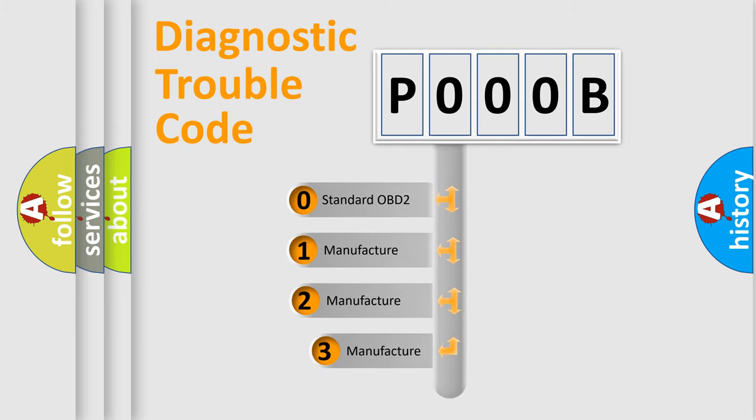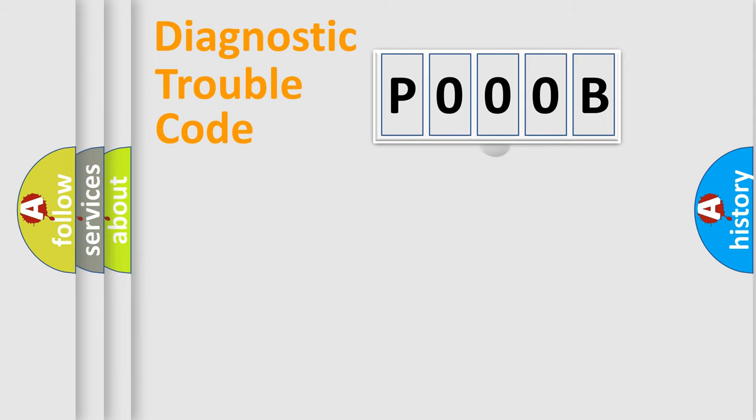If the second character is expressed as zero, it is a standardized error. In the case of numbers 1, 2, or 3, it is a manufacturer-specific expression of the car error.